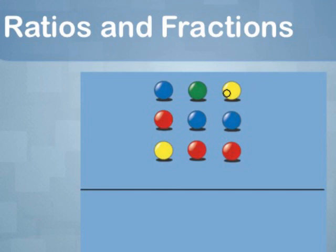Let's look at the ratio of yellow to red. As you can see, the ratio of yellow to red is 2 to 3, which can also be written in fraction form, 2 thirds.